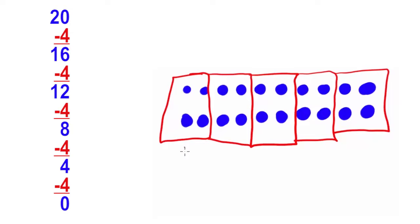I can also look on my model and count that there are 1, 2, 3, 4, 5. So I know that Pedro bought 5 tubs of cookie dough. That corresponds with the repeated subtraction on the side. I can see that I subtracted 4, 1, 2, 3, 4, 5 times. So this also shows me that Pedro bought 5 tubs of cookie dough.